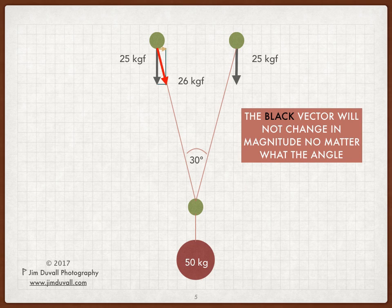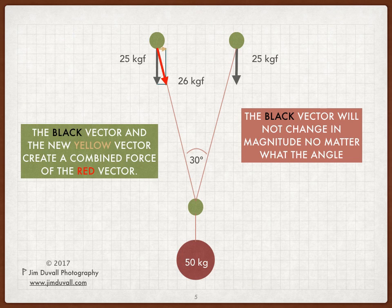The black vector is a result of the force of gravity and the mass of the person. Those two things are constant and will not change when the angles are altered. Therefore, the other two vectors must compensate for the changing angle. This is why we see the red vector, or force on the rope, become slightly larger as the angle between the two anchors changes.